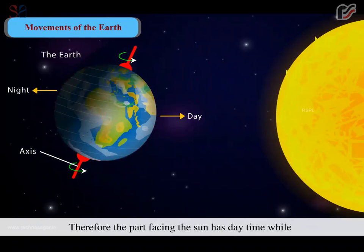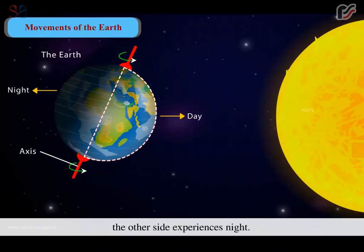Therefore, the path facing the sun has daytime, while the other side experiences night.